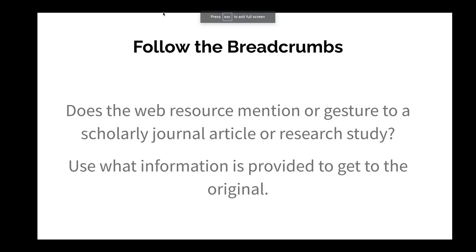Last but not least, it's always important to follow the breadcrumbs. If a web resource mentions or gestures to a scholarly journal article or a research study, use what information is provided to get to the original — usually at least the author's name or the name of the journal is included in a newspaper article. If you don't have that information or you're not sure where to start, please contact the Pfau Library. Librarians are happy to help you hunt down those scholarly journal articles and get the information that you need.